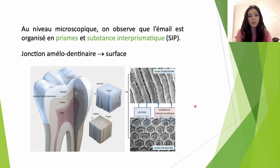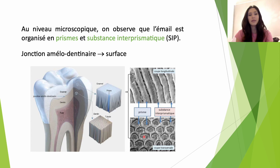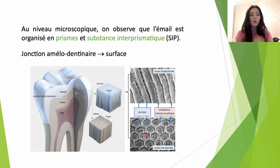Si l'on prend une coupe transversale, on va voir que ces prismes auront une section hexagonale. L'émail est donc organisé en prismes et en substance interprismatique, qui sont tous les deux composés de cristaux, ou cristallites d'apatites carbonatées, qui vont être formés d'hydroxyapatites polysubstituées.